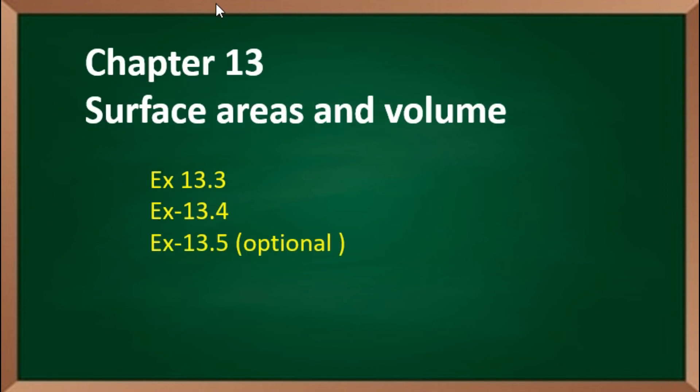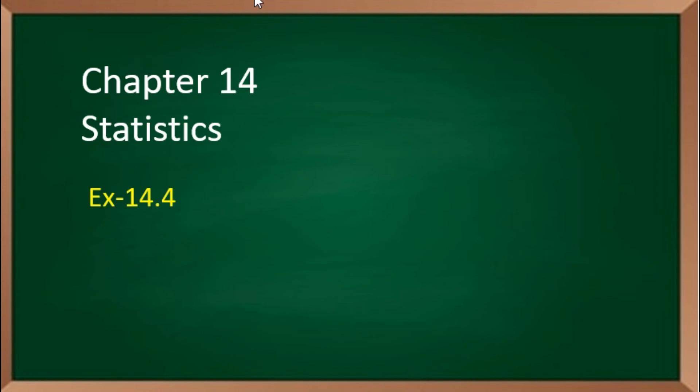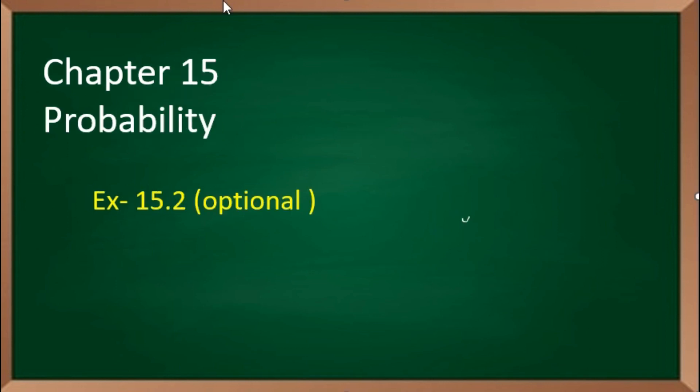Chapter number 13, Surface Area and Volume - you have to do 13.3, 13.4, 13.5 and the remaining exercises. Next, chapter 14 Statistics - you have to do exercise 14.4. Next chapter 15 Probability - you have to do exercise 15.2. But it is very important to see the new NCERT books.